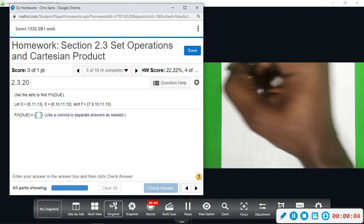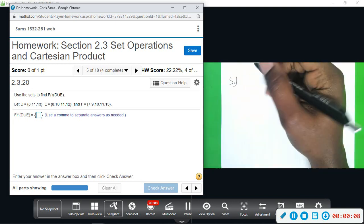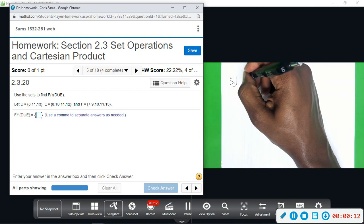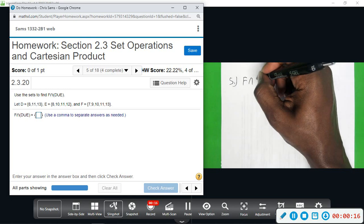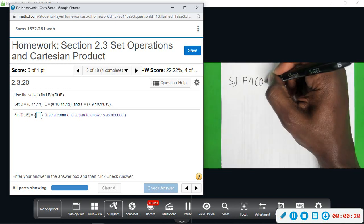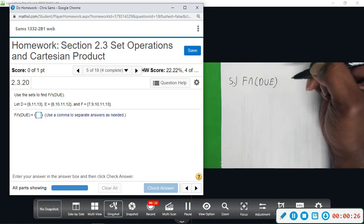All right, number five. We have, we want to find F intersect D union E. Okay, we want to find F intersect D union E.